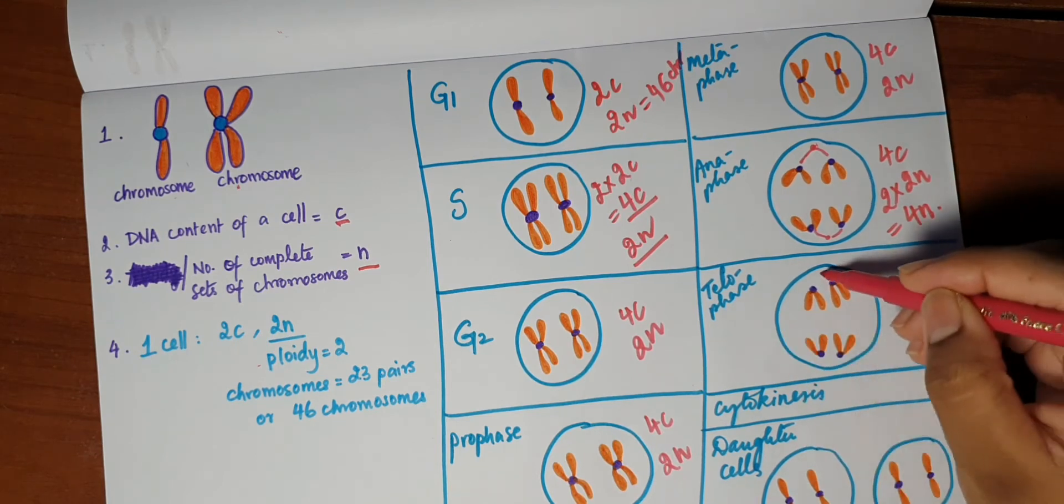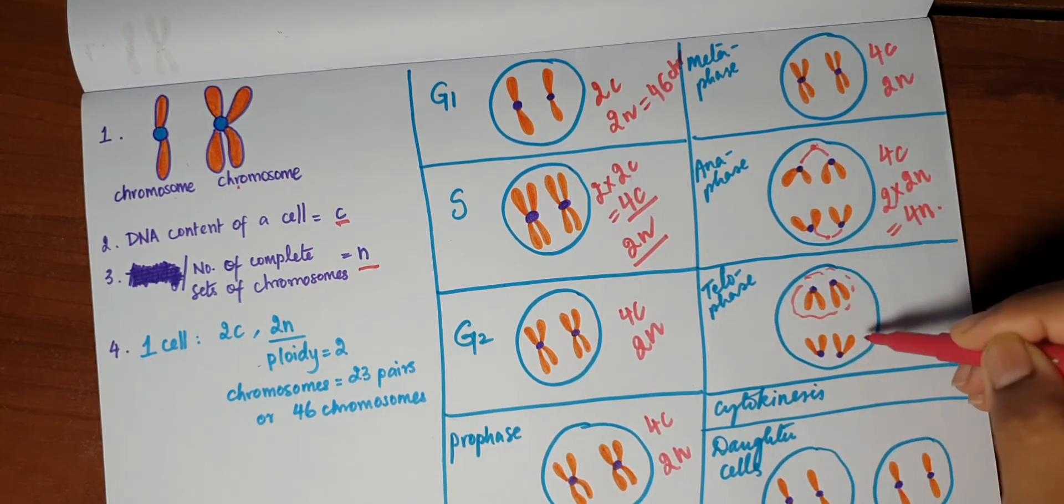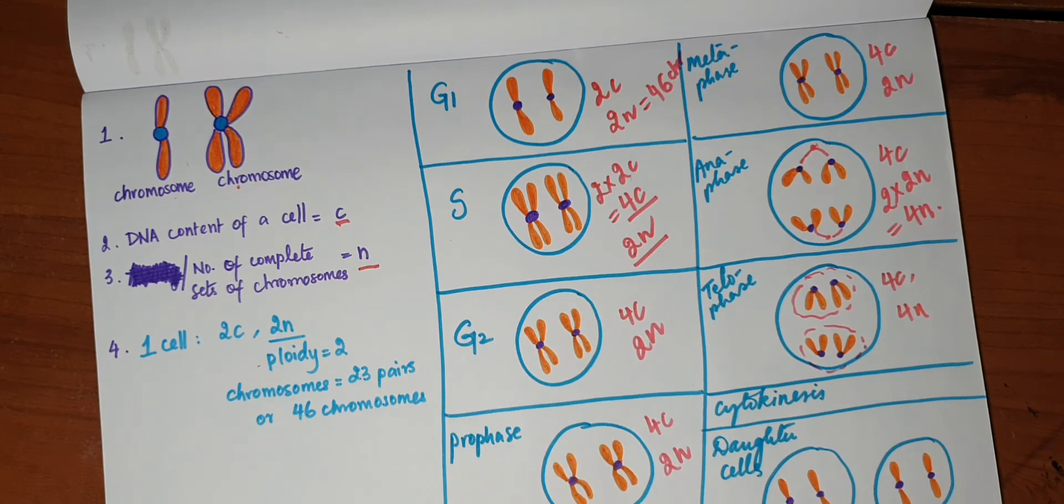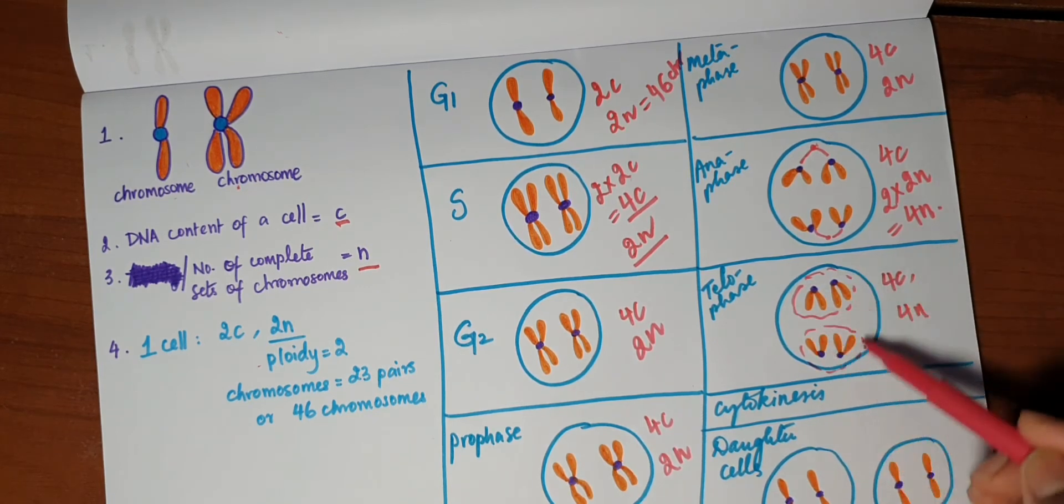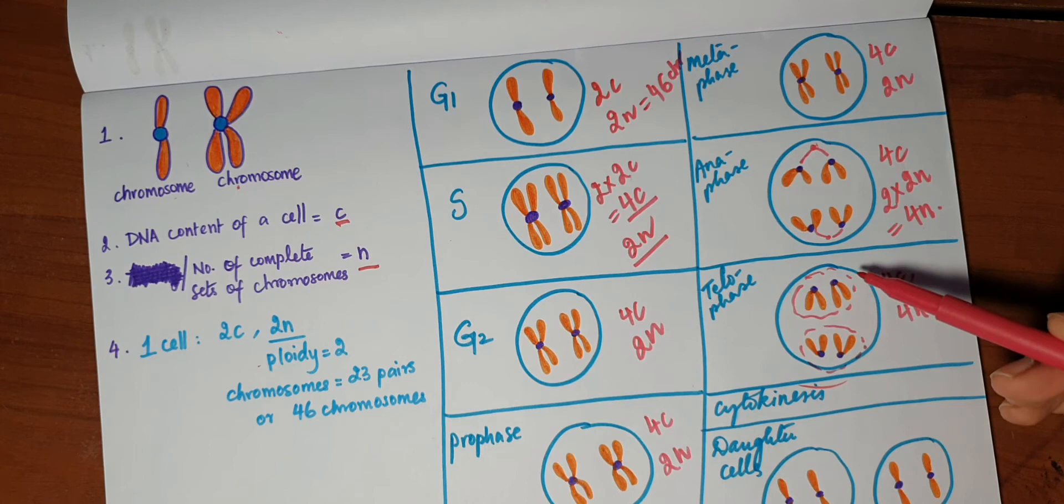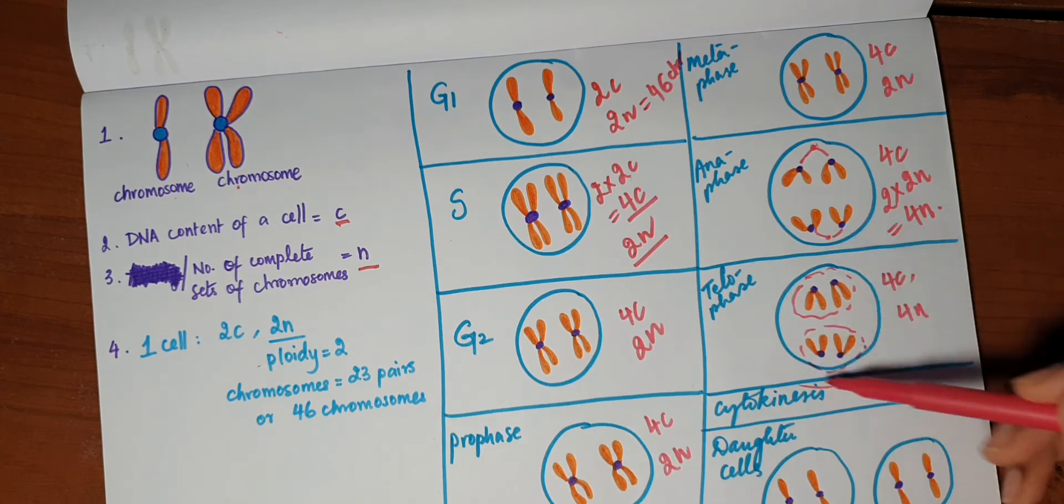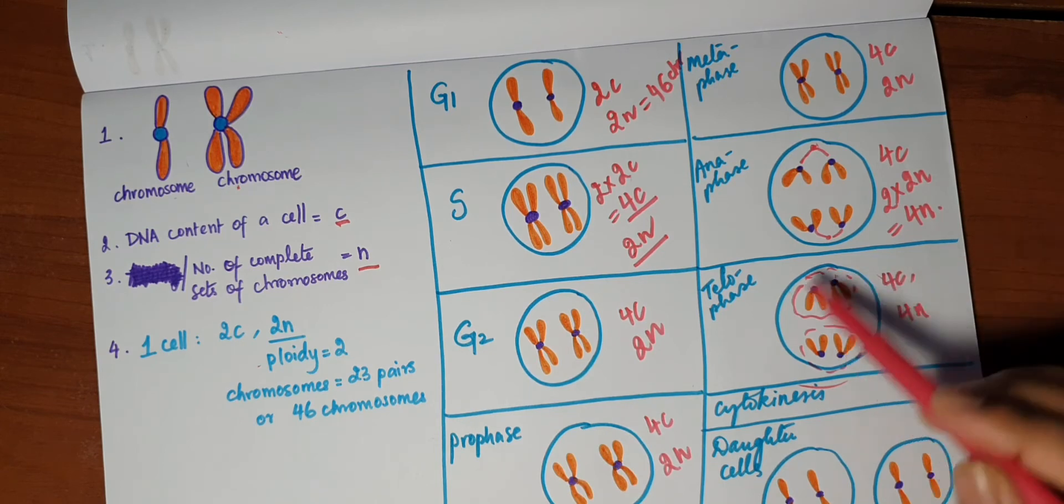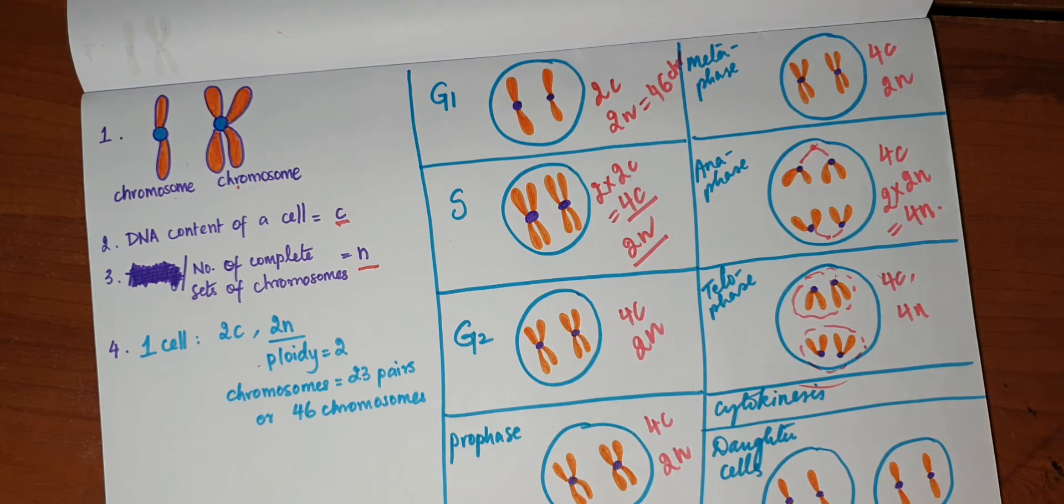In telophase, it's the same thing. You just have the nuclear envelope forming again. Otherwise, everything is the same. So 4c and 4n. Now even though in telophase two nuclei are formed, this is not considered as two separate cells because the cytoplasm is still intact. It has not divided yet. So this is all belonging to the same cell, even though they are in different nuclei. Even though there are two nuclei, we consider it to be a part of the single cell. So 4c and 4n.